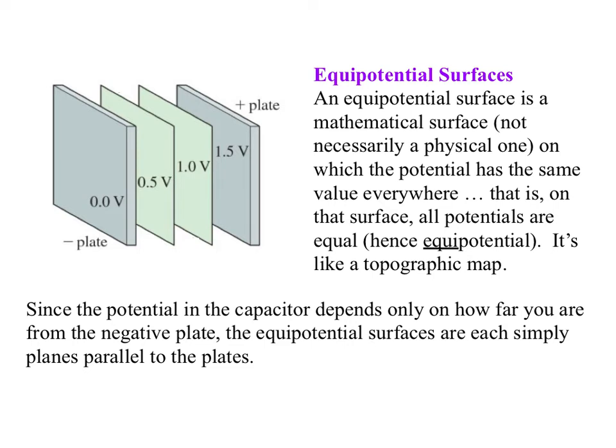We can draw what are called equipotential surfaces. An equipotential surface is a mathematical surface, not necessarily corresponding to a physical surface. It's just one you put out there mentally. And on that mathematical surface, the potential has the same value everywhere. That is, on that surface, all potentials are equal, hence the equipotential. It's a lot like a topographic map.